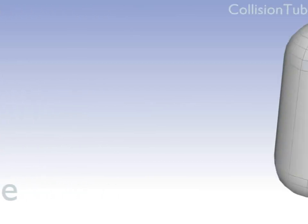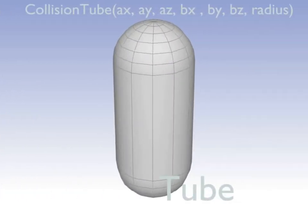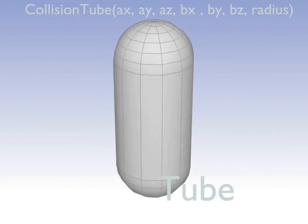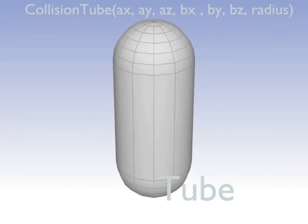Tube is not as useful in Panda as in, for example, Bullet, because it cannot be a from object. Let's hope the developers will add that someday. It can still be used as an into object.